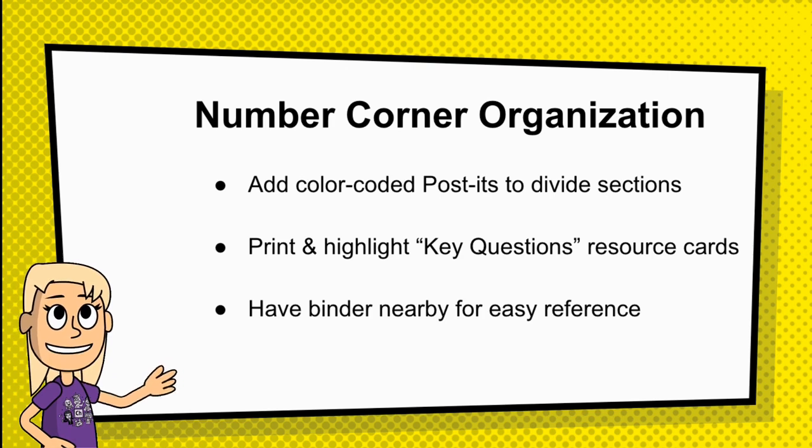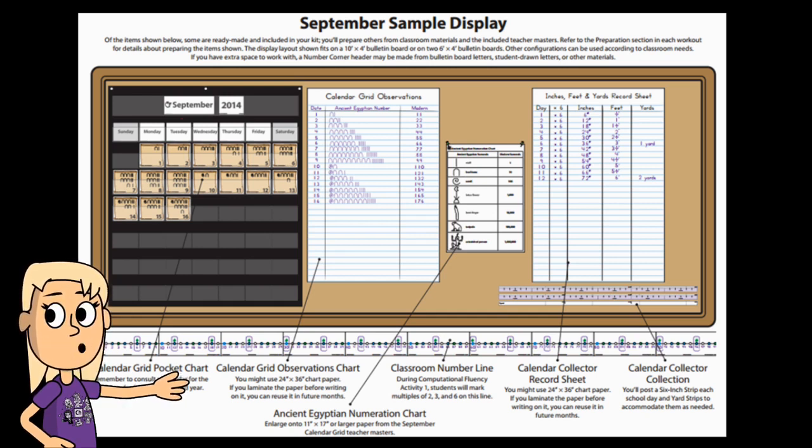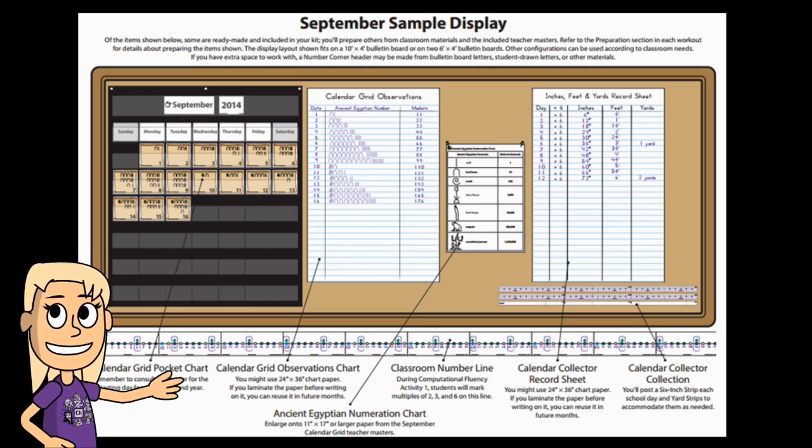Now Number Corner organization. This is my advice. Add color-coded post-its to divide the sections up so it's easy to access and flip around and know where you are inside your teacher's manuals. You want to print and highlight key questions resource cards. And always have your binder nearby for easy reference. You need that as a teacher. You need your teacher's manual. Here's an example of a September Number Corner display. You've got a pocket grid chart. You've got the observation chart. You have a classroom number line. This is third grade with a number line. You have your calendar collector record sheet. And each number corner varies just slightly. So you'll have to be on top of knowing what you have to create and how you're going to display it up in your classroom.